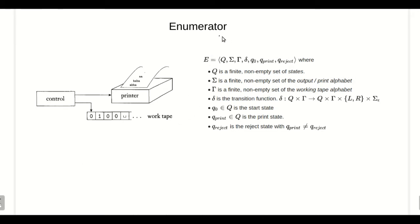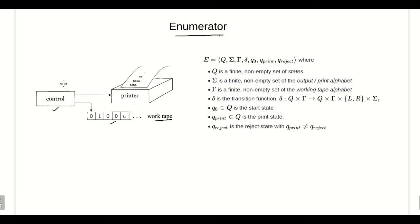All the machines we have seen so far are accepting machines — they accept a given language. Unlike those, an enumerator is a generating or enumerating machine. It has a finite control and a work tape. The finite control performs operations on the work tape, and after reaching some state, it will print an output on an output tape. After processing a sequence of symbols on the work tape, the enumerator reaches a printing state and prints the output.